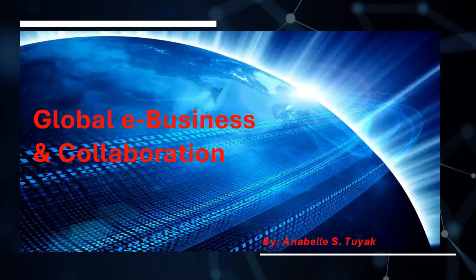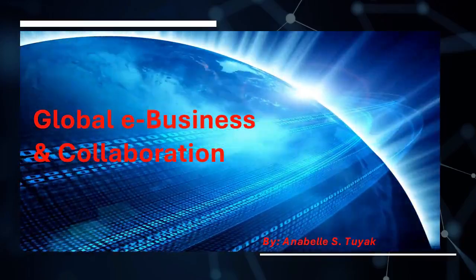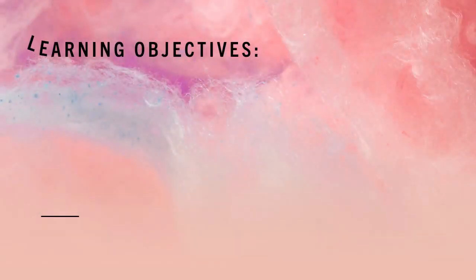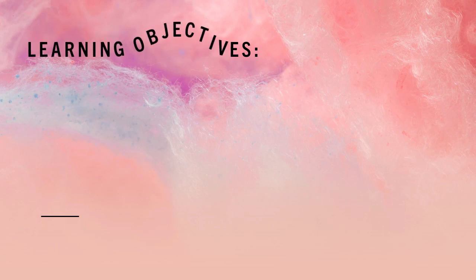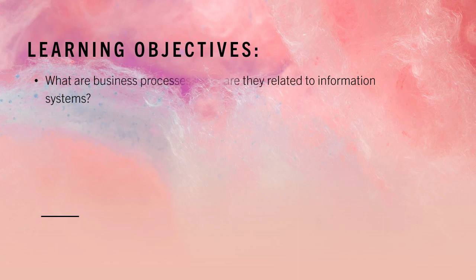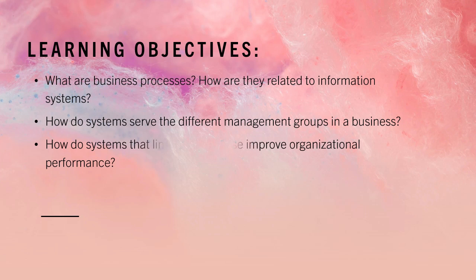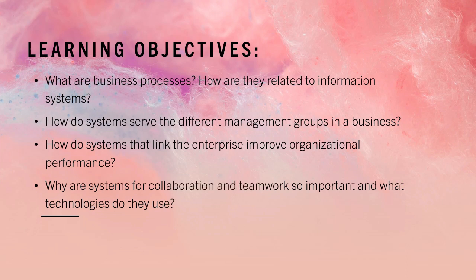Good day, this is Annabelle, and today we will discuss global e-business and collaboration. After reading this chapter, you will be able to answer the following questions — our learning objectives: What are business processes? How are they related to information systems? How do systems serve the different management groups in a business? How do systems that link the enterprise improve organizational performance? Why are systems for collaboration and teamwork so important and what technologies do they use? What is the role of the information systems function in a business?